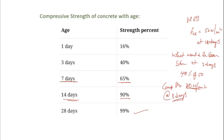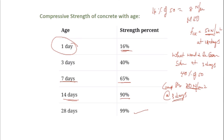You cannot wait 28 days to assess the concrete strength because by that time it has already been used in construction. So the age-strength relationship table helps: at one day, the strength should be about 16% of the characteristic strength. For M50, that would be approximately 8 N/mm² at one day. This table helps verify the strength at various stages.